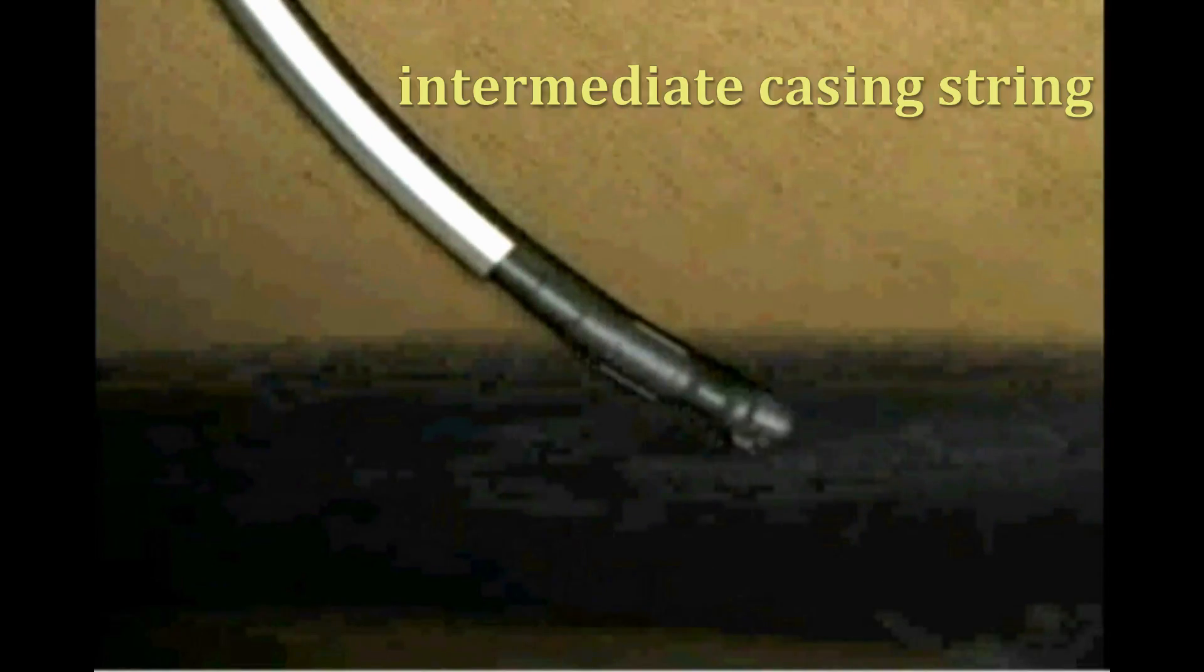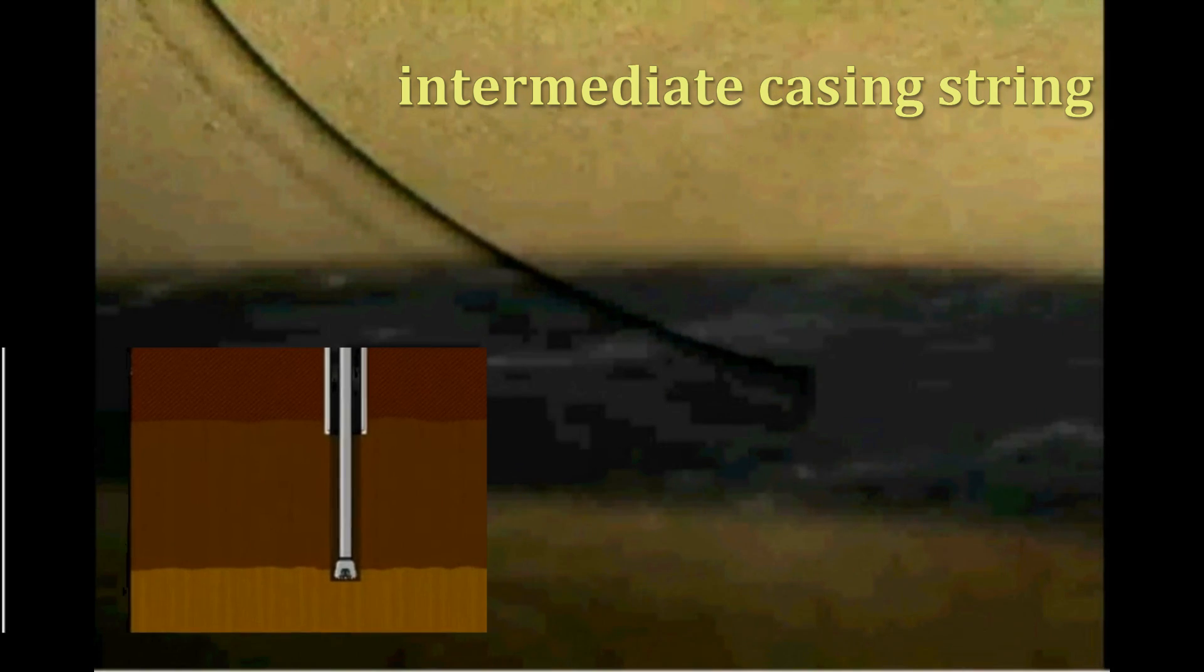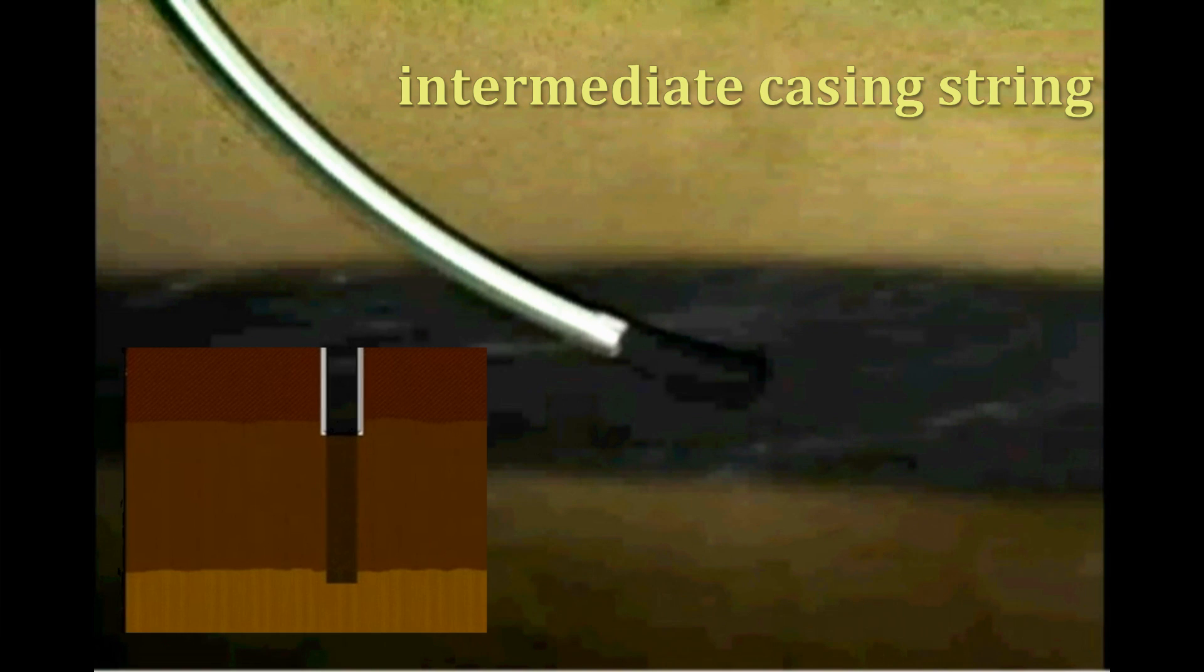Once the surface casing is in place, drilling resumes. For shallow wells, the surface casing may be all that is required before initializing the production casing. For deeper wells, or where the formation becomes unstable because of prolonged contact with the mud, an intermediate casing string may be necessary. Very deep holes may require two or three intermediate strings.